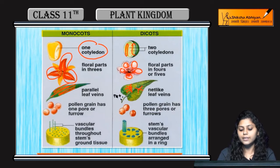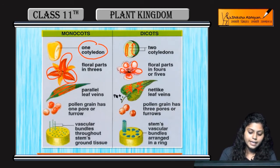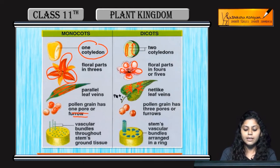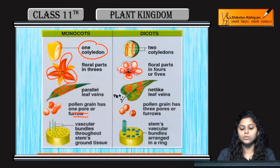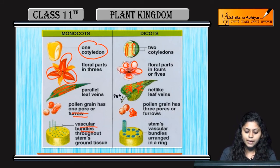If the vein structure is net-like, that is called reticulate venation, found in dicots. Pollen grains in monocots have only one pore and one furrow, whereas in dicots there are multiple pores — more than two pores.